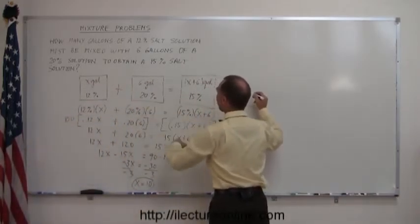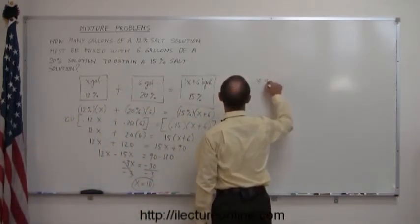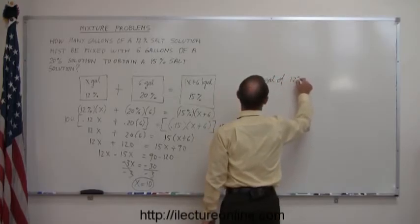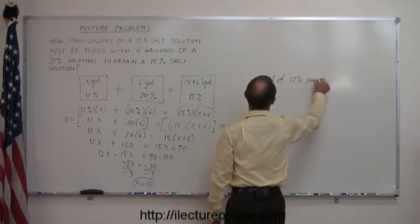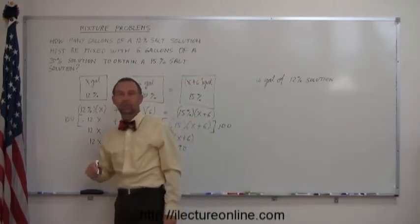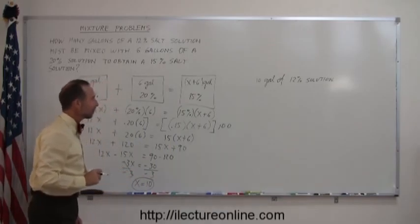The answer is you need 10 gallons of the 12% solution to end up with a 16-gallon solution of 15% salt.